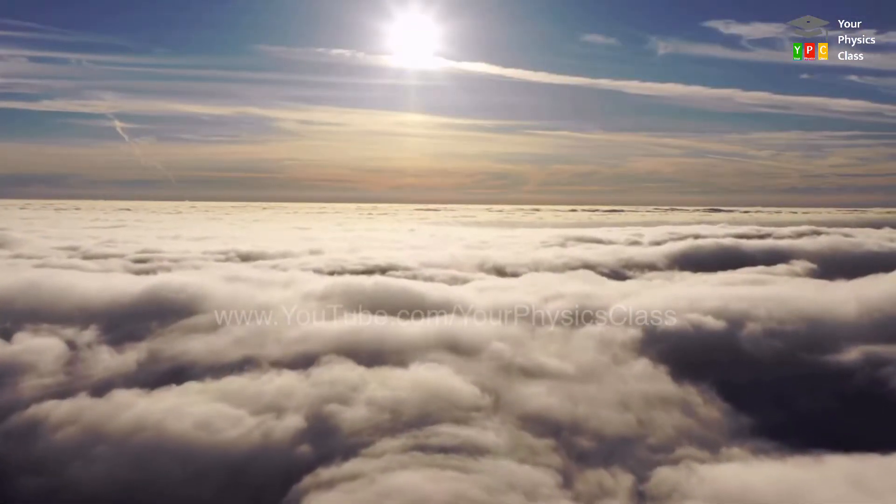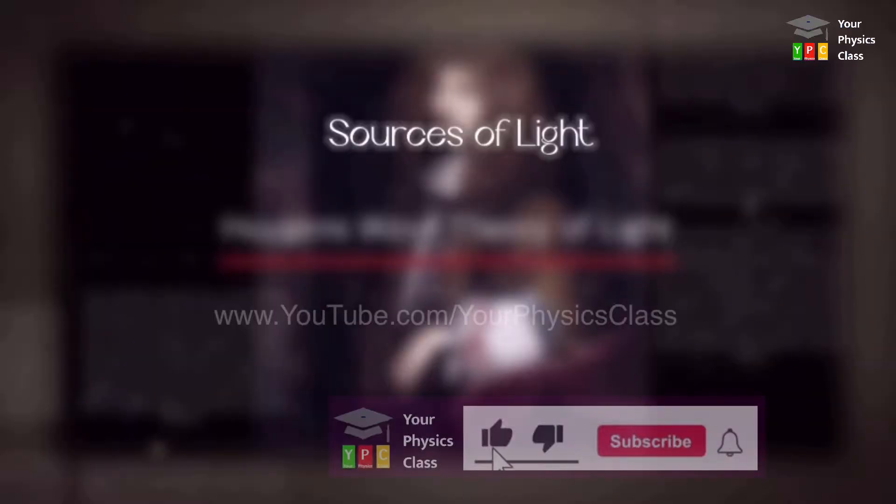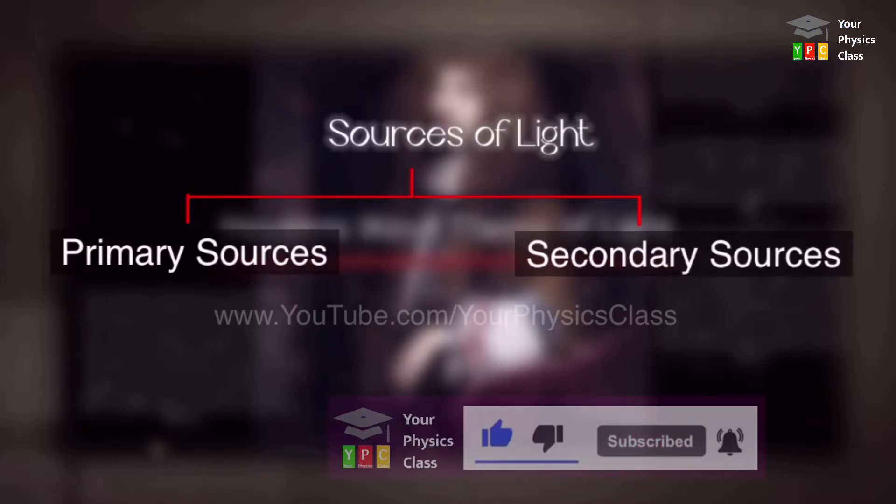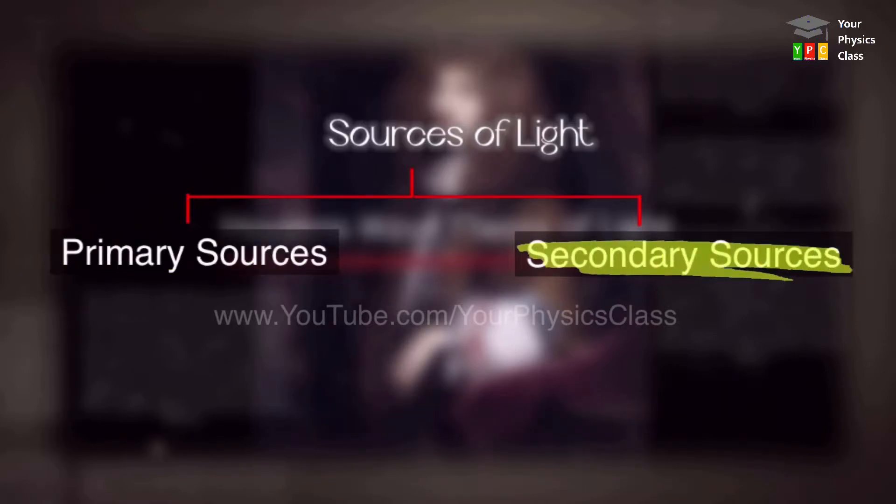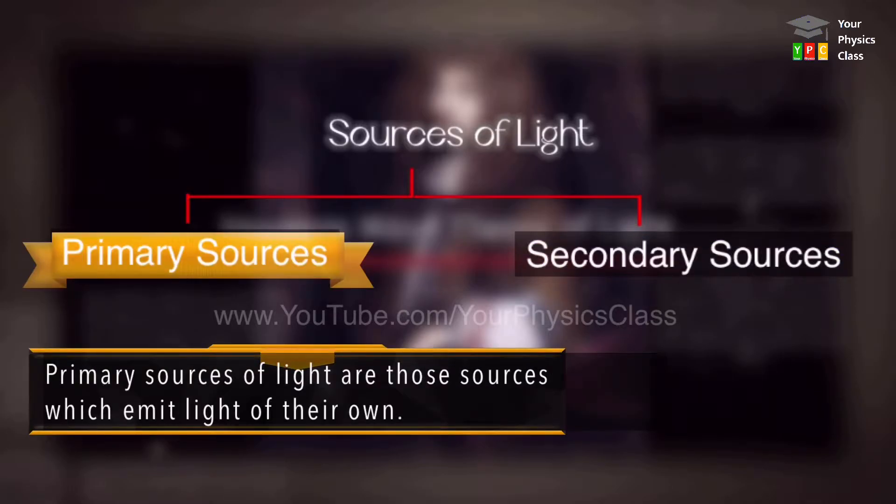These sources of light can be classified into two categories: primary source of light and secondary source of light. The primary sources of light are those sources of light that emit light of their own.